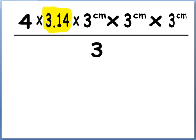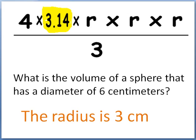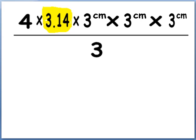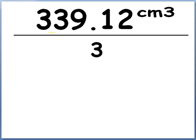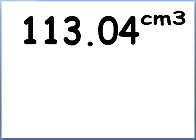So we simply then plug in the 3 centimeters, or where we had the r's, we plug in the 3 centimeters, and since we have 3 centimeters times 3 centimeters times 3 centimeters, we wind up with centimeters cubed. Multiplying all the numbers, we come up with 339.12, two decimal places because that's what we had. Centimeters cubed, divide that all by 3, and we wind up with 113.04 centimeters cubed.